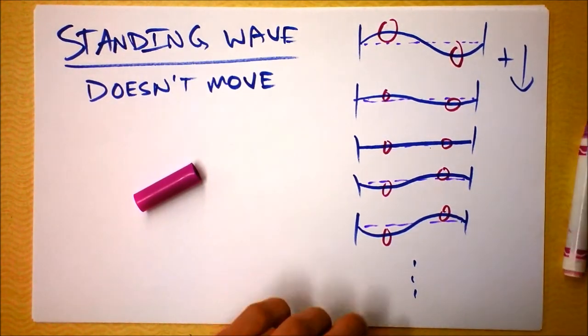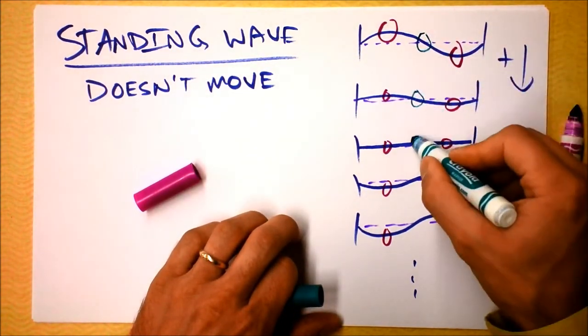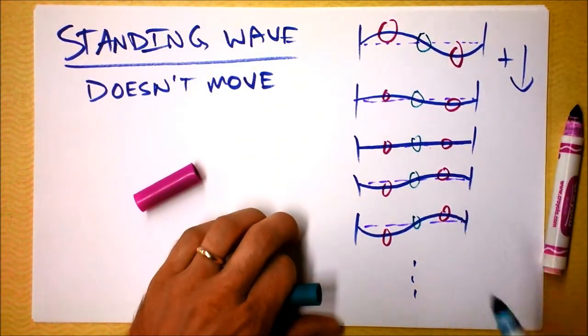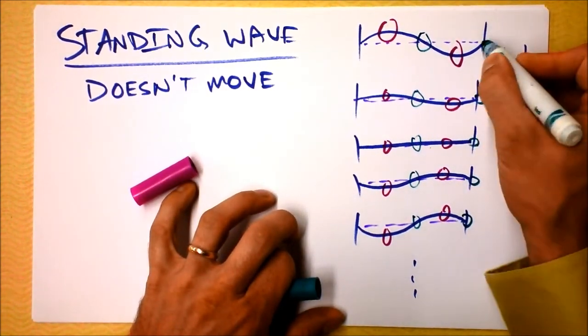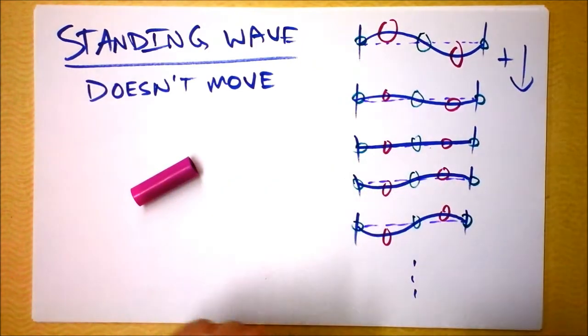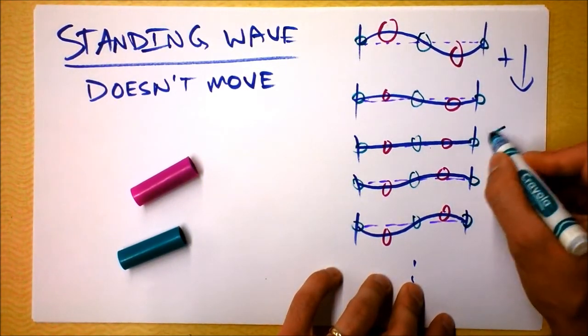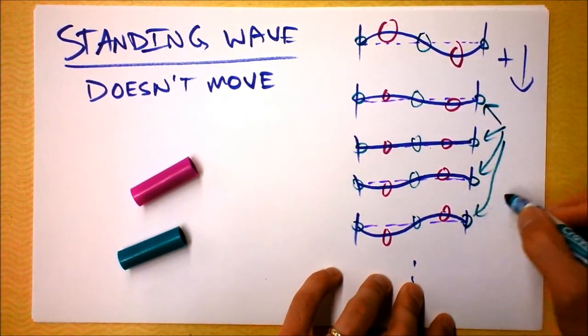But now I want you to consider this location right here, in the center. What's happening to the rope right there? Absolutely nothing. And do you notice the same thing right here? Nothing is happening to the rope at that end, and similarly nothing is happening to the rope at that end. These green circles I'm going to call nodes, because they are not moving.